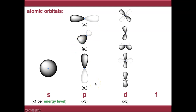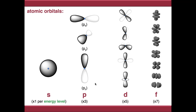D orbitals have more complex shapes and there are five of those per energy level, and F orbitals have even more complex shapes with seven per energy level. For the purposes of this video we're not going to come across them — in organic chemistry we don't tend to come across them too often, because we don't use elements heavy enough to contain them.